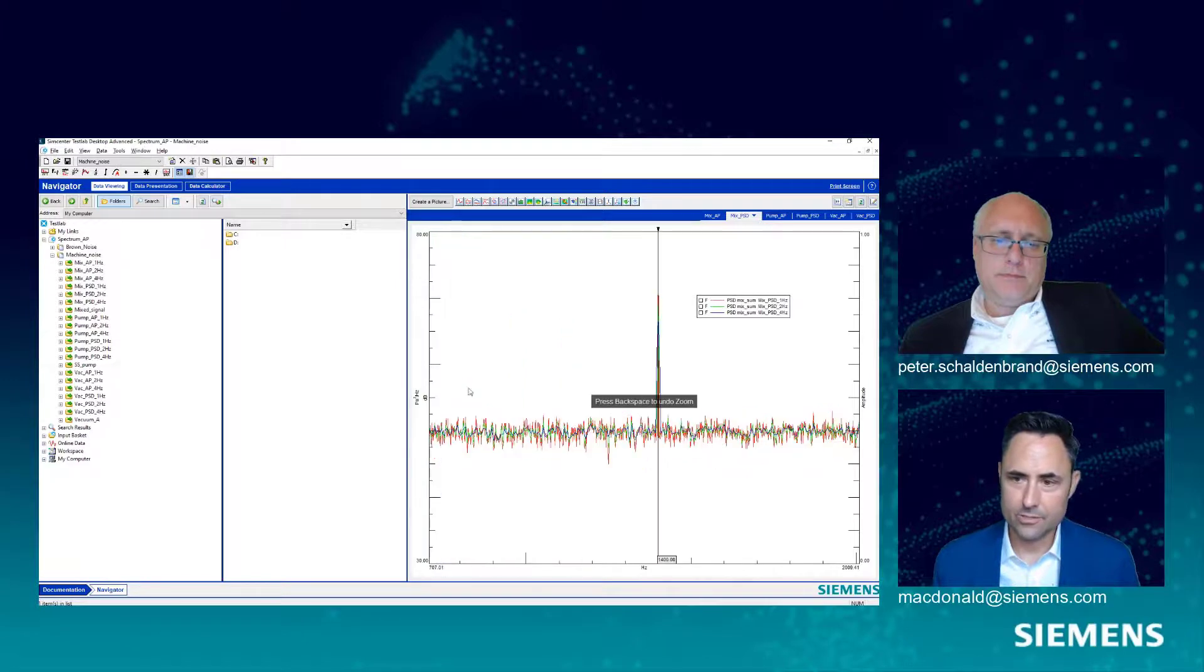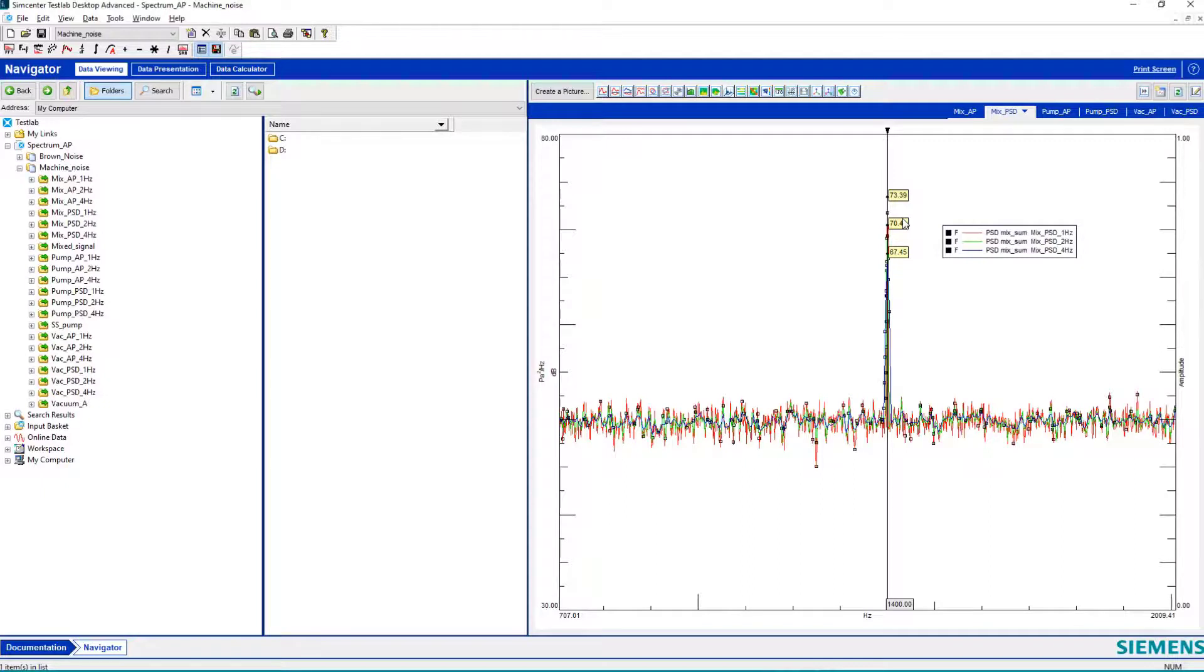let's zoom in again. So now we see the broadband random portions of our signal are all lying on top of each other. But now what have I done to my sinusoidal component?